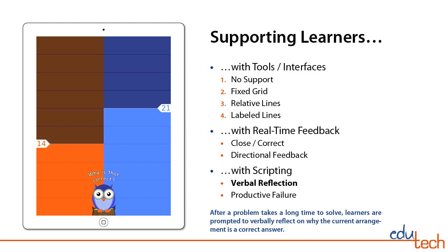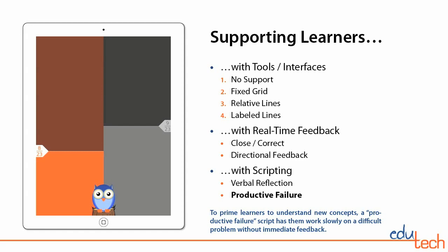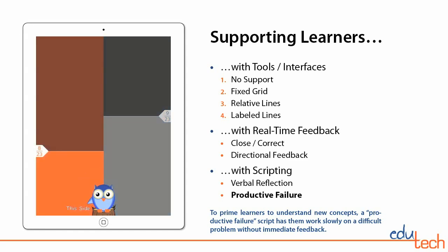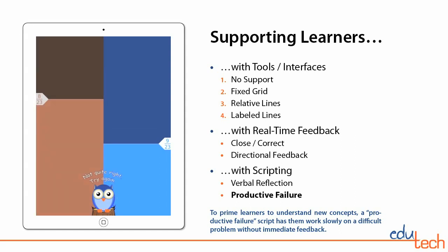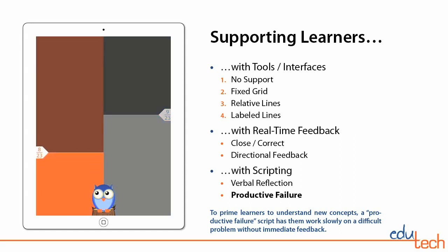In addition, the app uses two collaboration scripts to promote verbalization. If a problem takes a long time to solve, learners are prompted to verbally reflect on why the current arrangement is a correct answer. To prime learners to understand new concepts, a productive failure script has them work slowly on a difficult problem without immediate feedback. If learners cannot solve the problem, a canonical solution is provided.